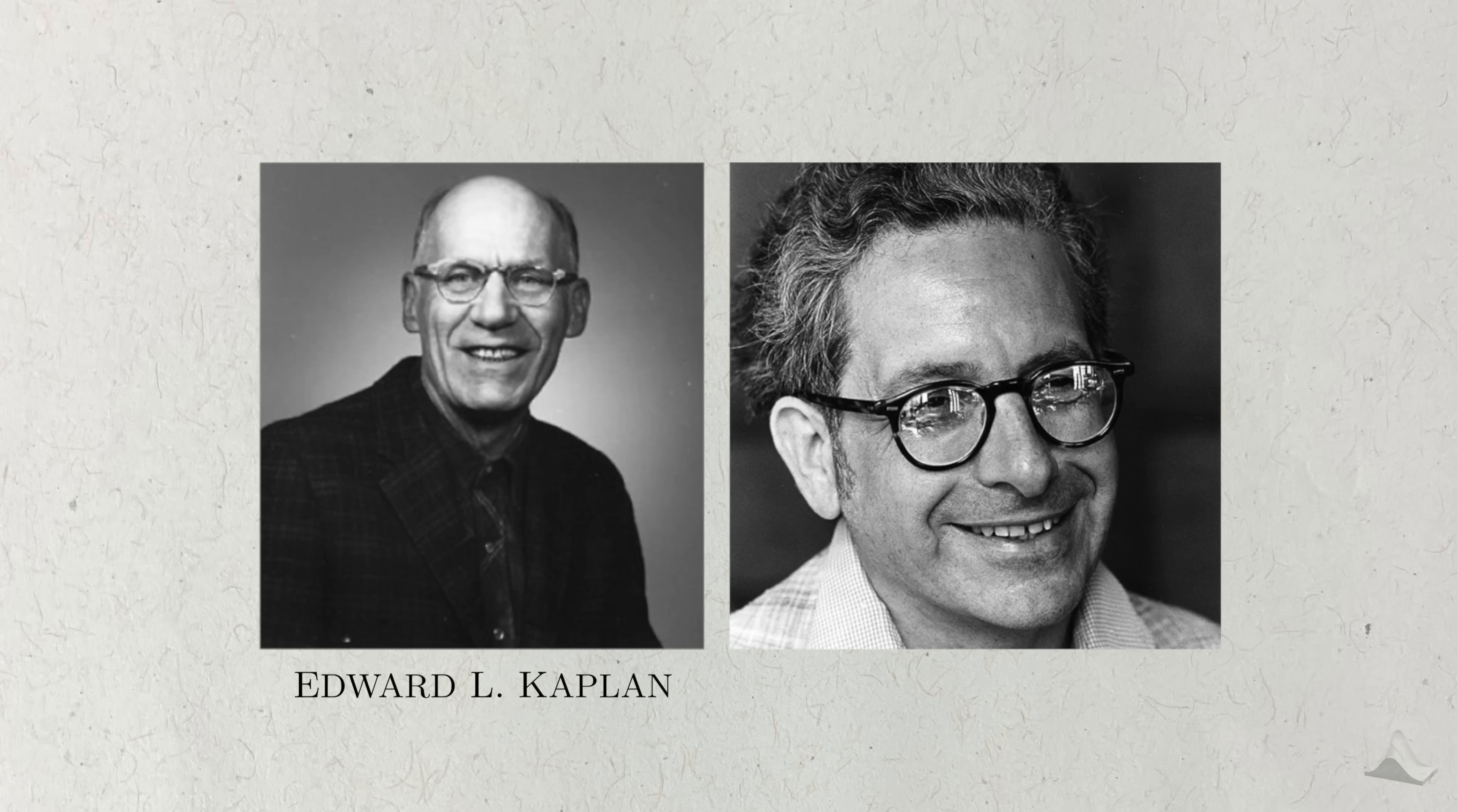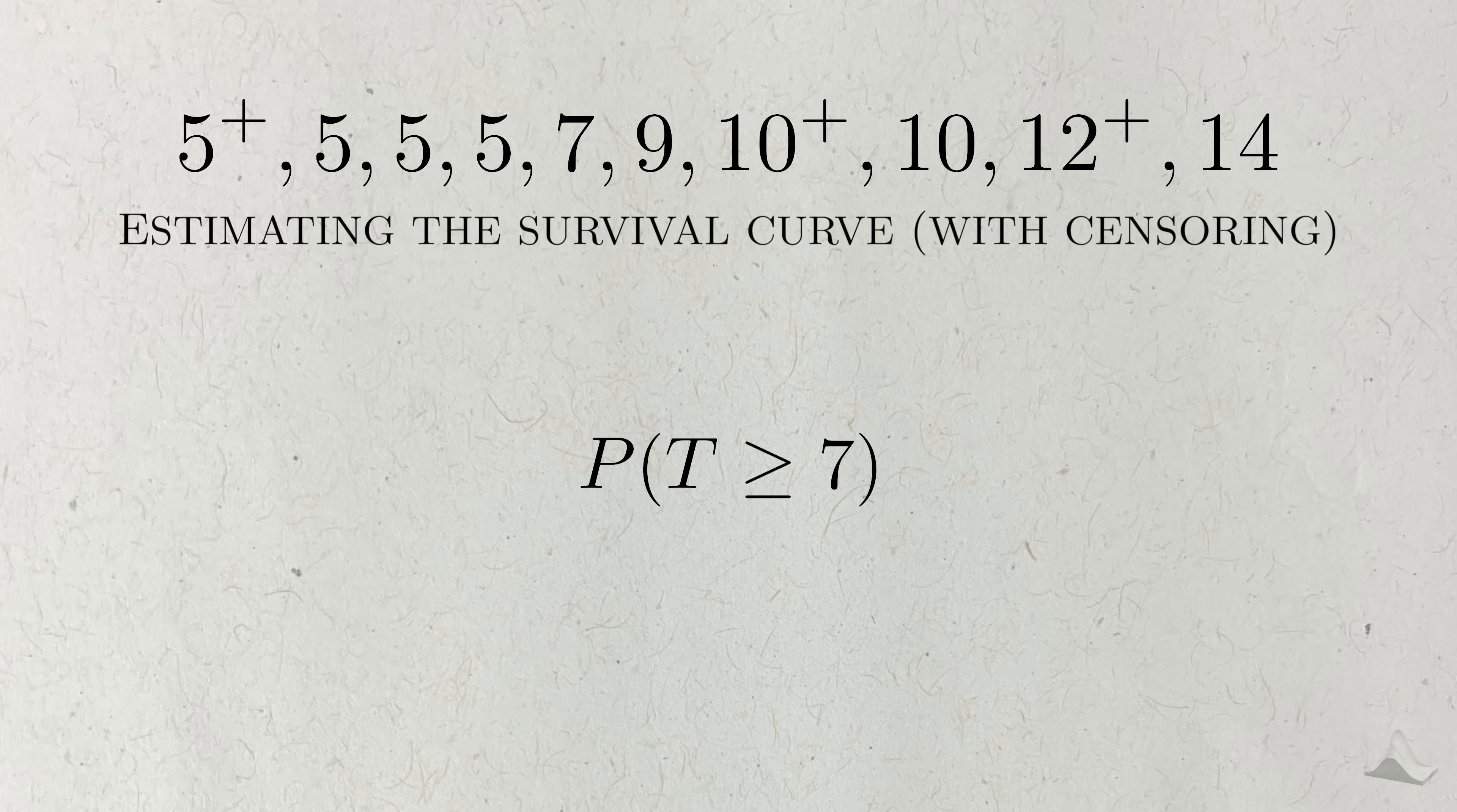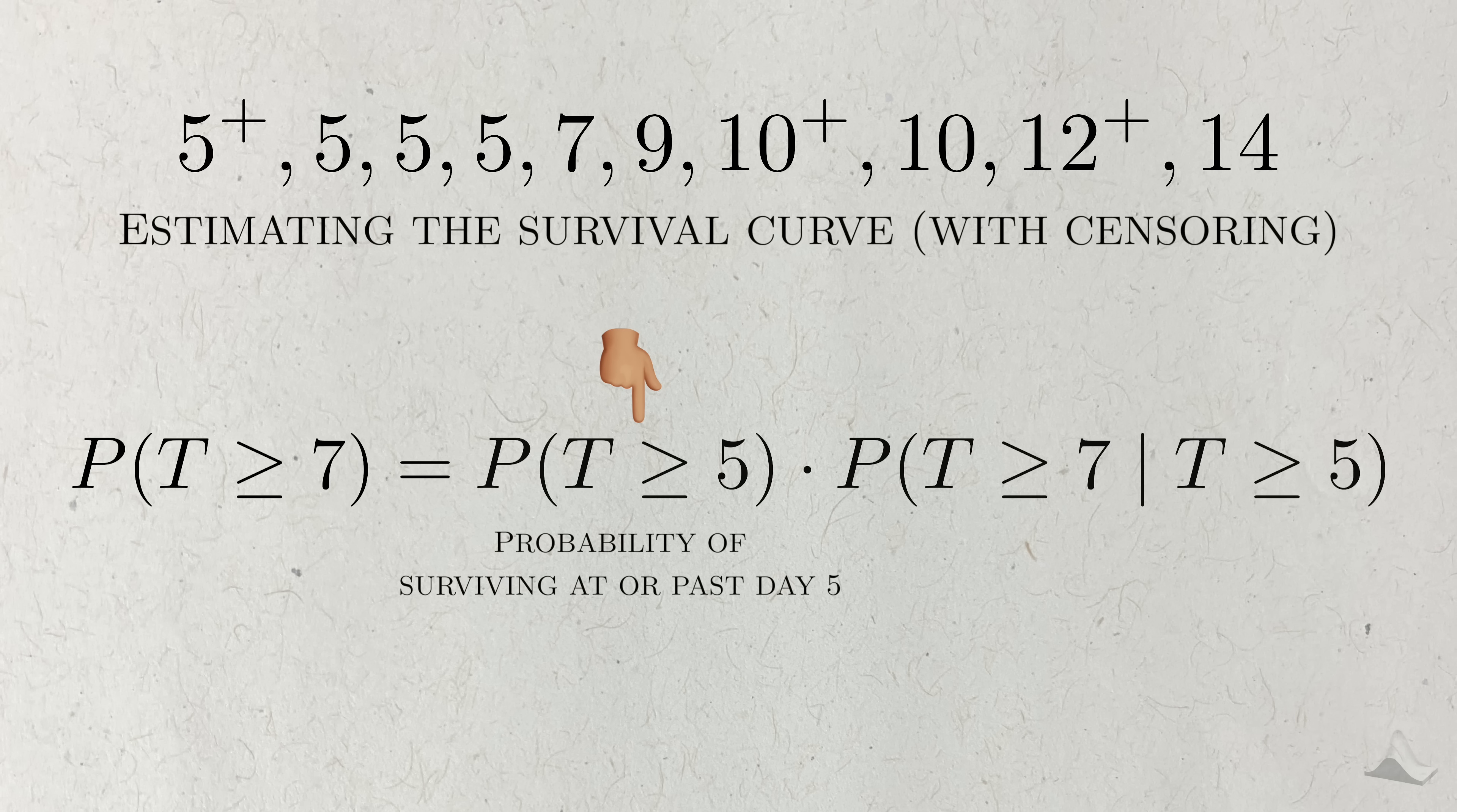Thankfully, mathematician Edward Kaplan and statistician Paul Meyer figured out an alternative way to estimate the survival function, even in the face of censored data. Their method hinges on the idea of conditional probability to estimate the survival function. Going back to the previous data, we want to estimate the probability of surviving up to day 7 or longer. Instead of just viewing this as a single event, Kaplan and Meyer had the insight to break it down into two events. This single person in the data didn't just survive until day 7, they also survived at day 5. This single probability becomes a joint probability. Using an elementary probability identity, you can convert this joint probability into the product of a marginal probability, the probability of surviving at or past day 5, the first time point, and a conditional probability, the probability of surviving at or past day 7, given that they survived until day 5.